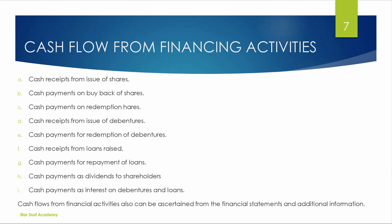Cash receipt from issue of shares — shares are issued and cash is received. Cash payment on redemption of shares. Cash payment on redemption of debentures. Cash receipt from loans raised. Cash payment for repayment of loans. Cash payment of dividend to shareholders. Cash payment of interest on debentures and loans.